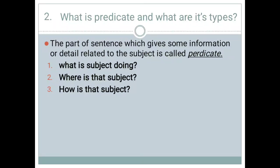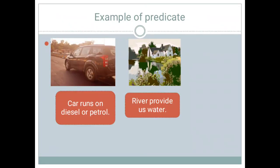The predicate tells us: what the subject is doing, where the subject is, and how the subject is. In this slide, two sentences are shown with pictures. In the first picture, a car is shown. When we see the picture of a car, questions like how much mileage does it give or what are its qualities come to mind.